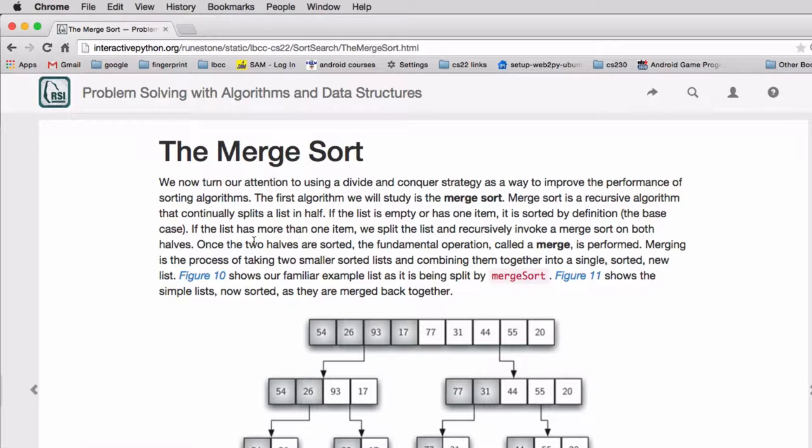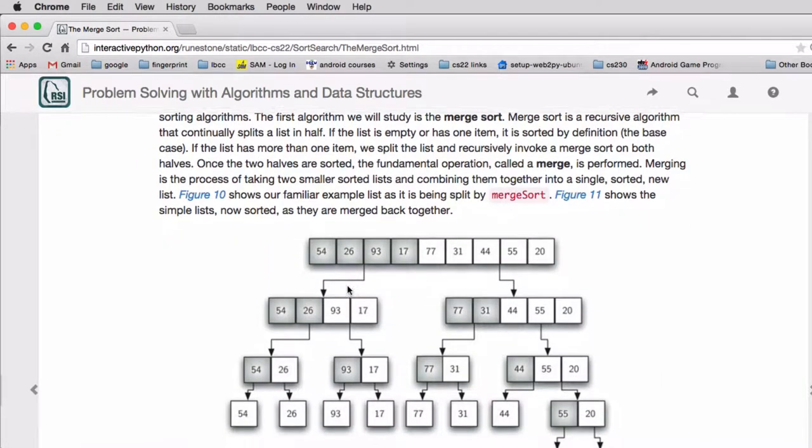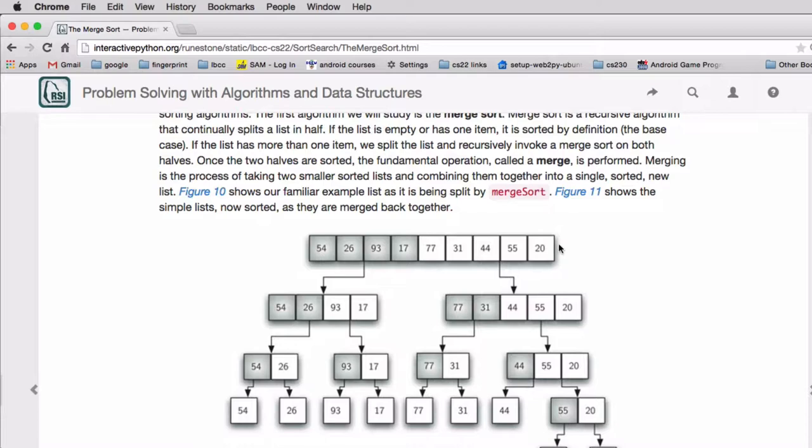The merge sort is very interesting. It's a recursive sort, and basically it starts with the original list and splits it into two halves. And then it recursively calls to solve the problem in each smaller list. In the smaller list, it then splits that into two halves. And then each of those are split into two halves.